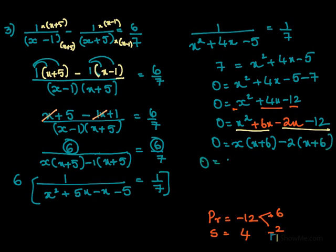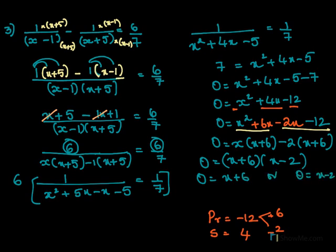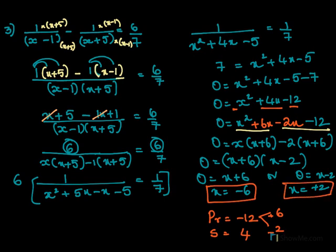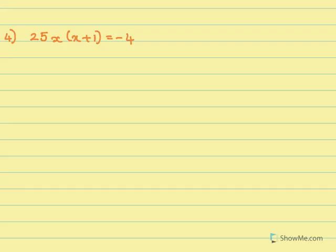So 0 equals (x plus 6)(x minus 2). We have x plus 6 equals 0 or x minus 2 equals 0. So x equals minus 6 or x equals plus 2. These are your answers: x equals minus 6 or x equals plus 2.